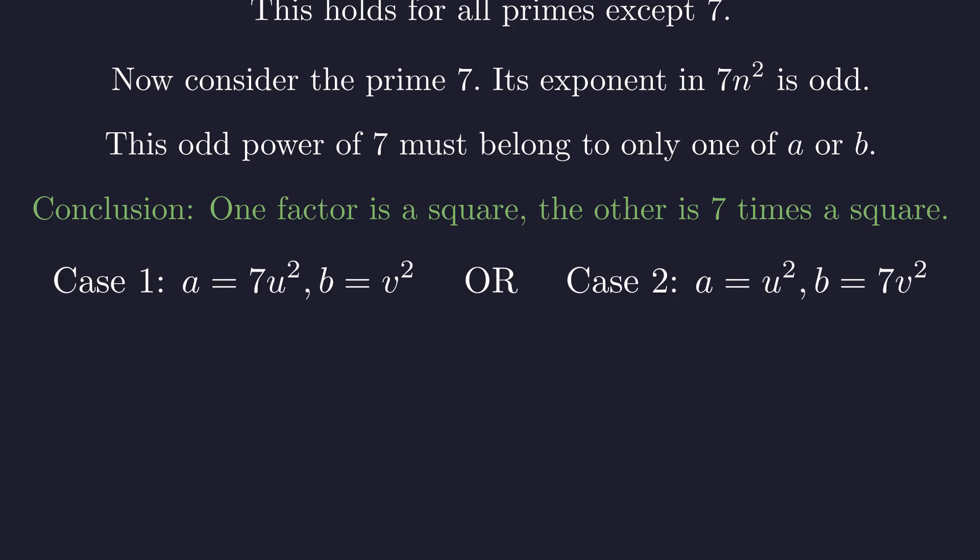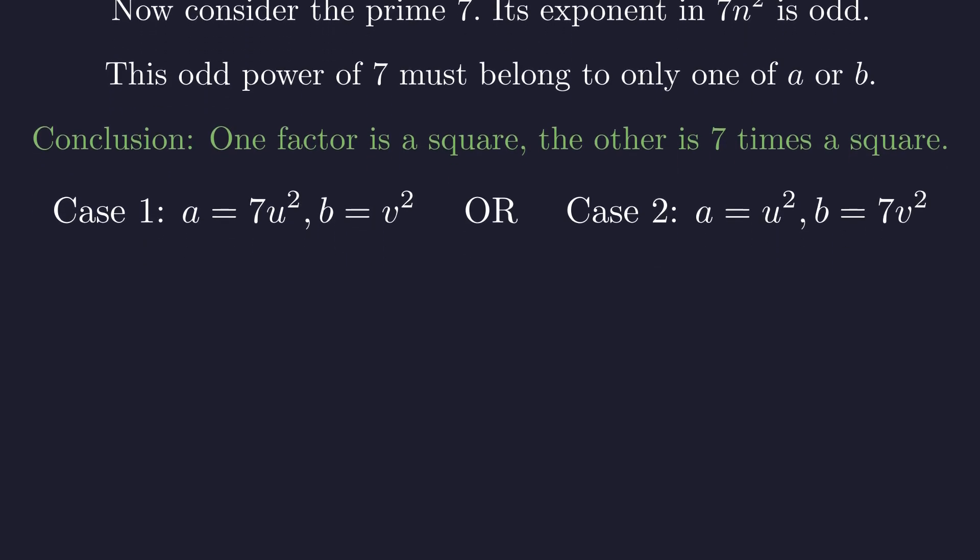Case 1, where a is 7 times u² and b is v², or Case 2, where a is u² and b is 7 times v². We also know that b minus a equals 1.